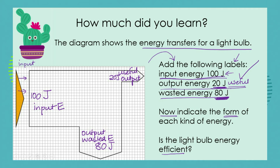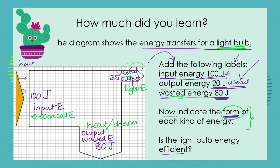Now we have to indicate the form of each kind of energy. What is the input energy for a light bulb? We know that this is electrical energy as our input energy. What is the useful output? Well, the aim of a light bulb is light energy. And our wasted energy — what form is that in? It's in the form of heat. You can also use the term thermal energy.